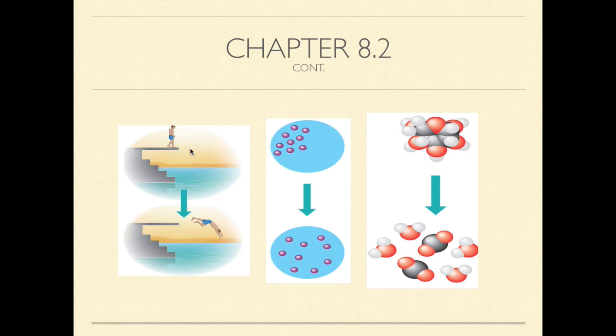For example, a diver on top of a platform is less stable than when he's floating in water. A drop of concentrated dye is less stable than when it is spread randomly through the liquid. And a sugar molecule is less stable than the simpler molecules into which it can be broken up into. Systems that are high in free energy are more unstable and tend to move toward a more stable state, or one with less free energy.